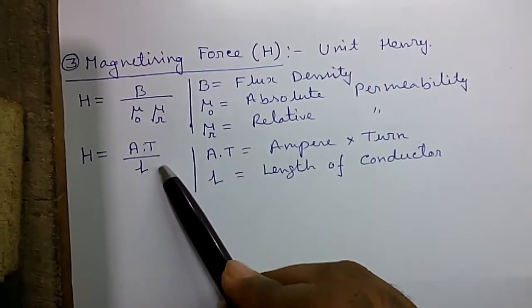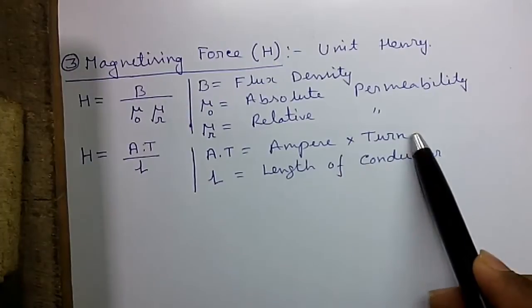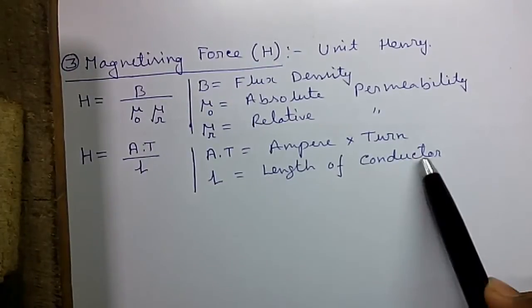Another formula H equals to AT by L, where AT is the ampere turn and L is the length of the conductor.